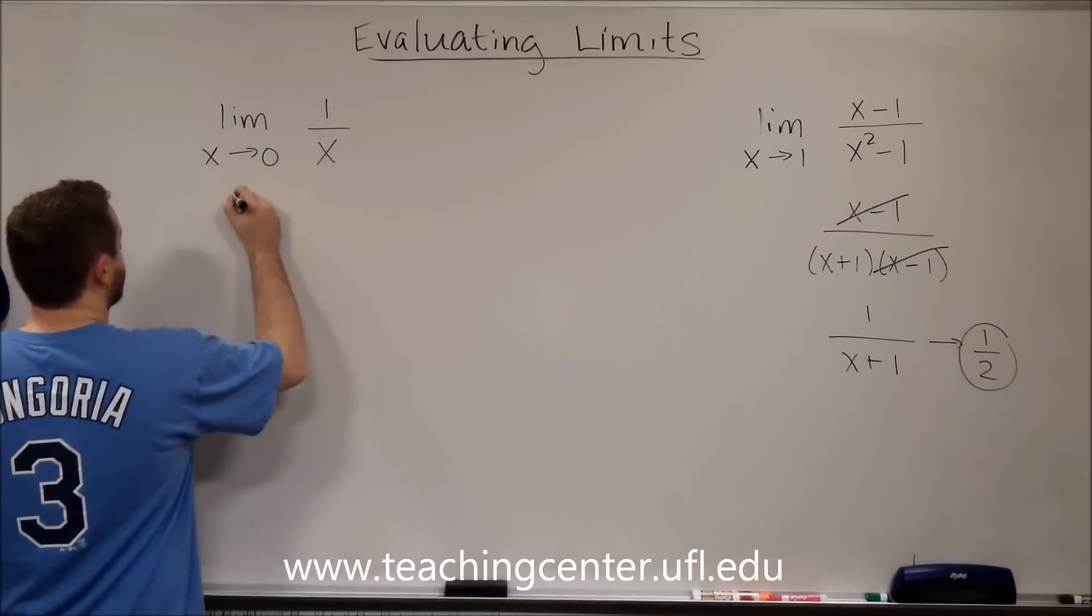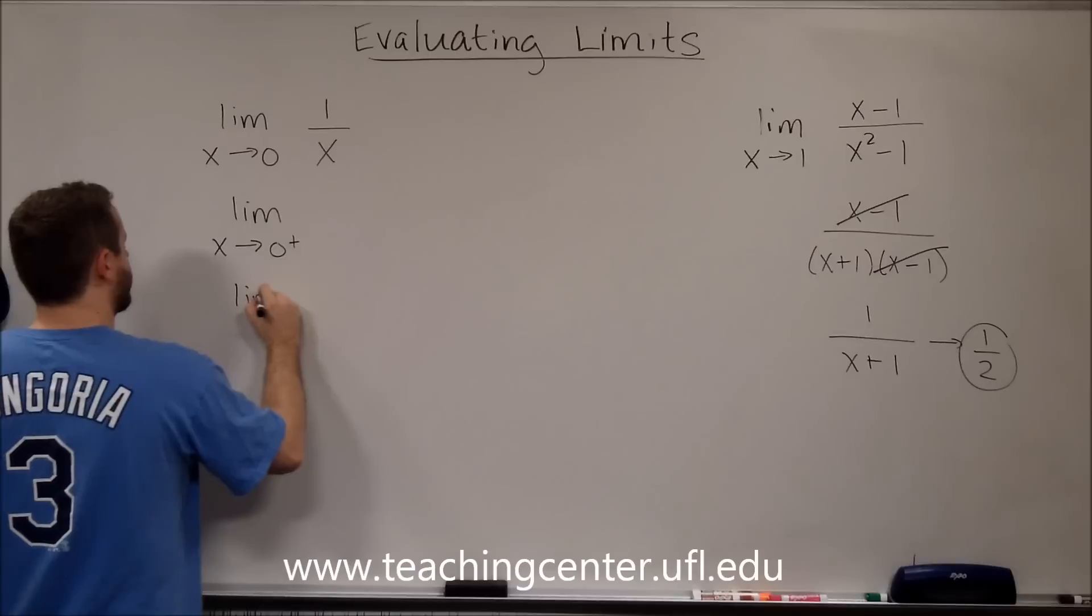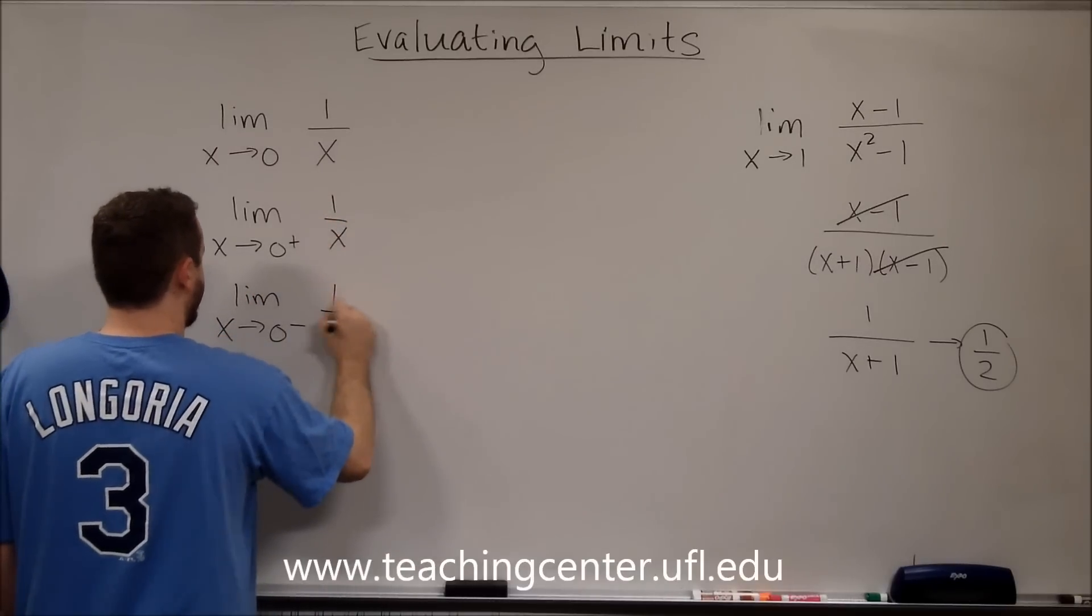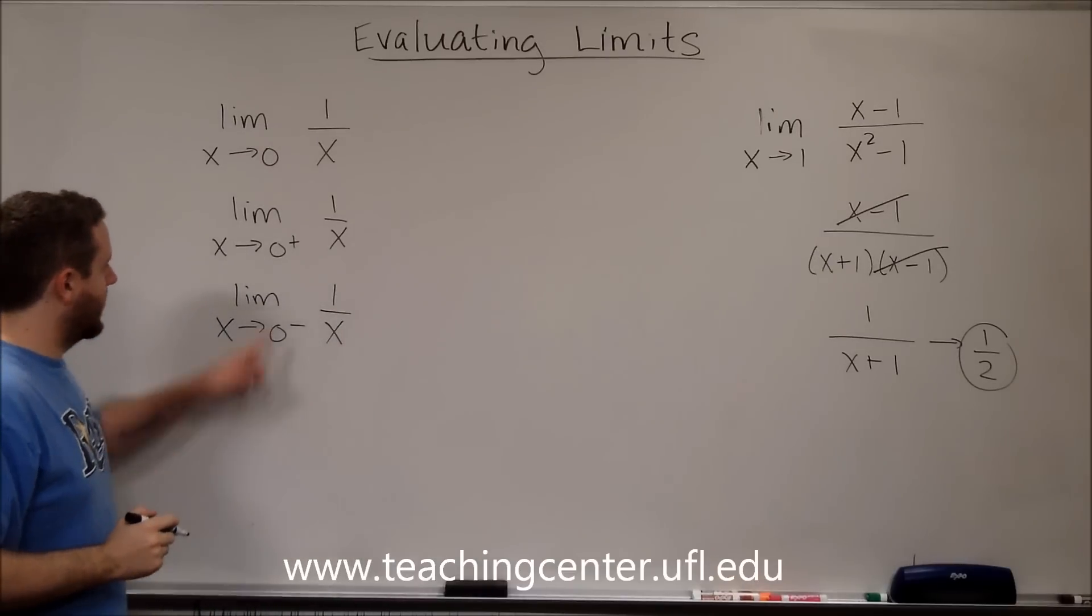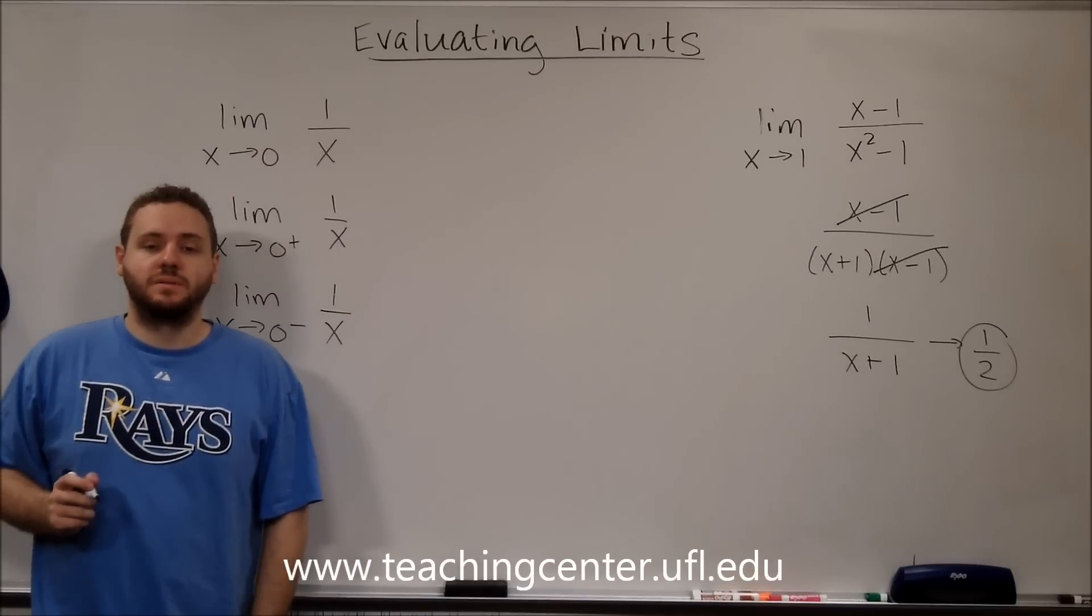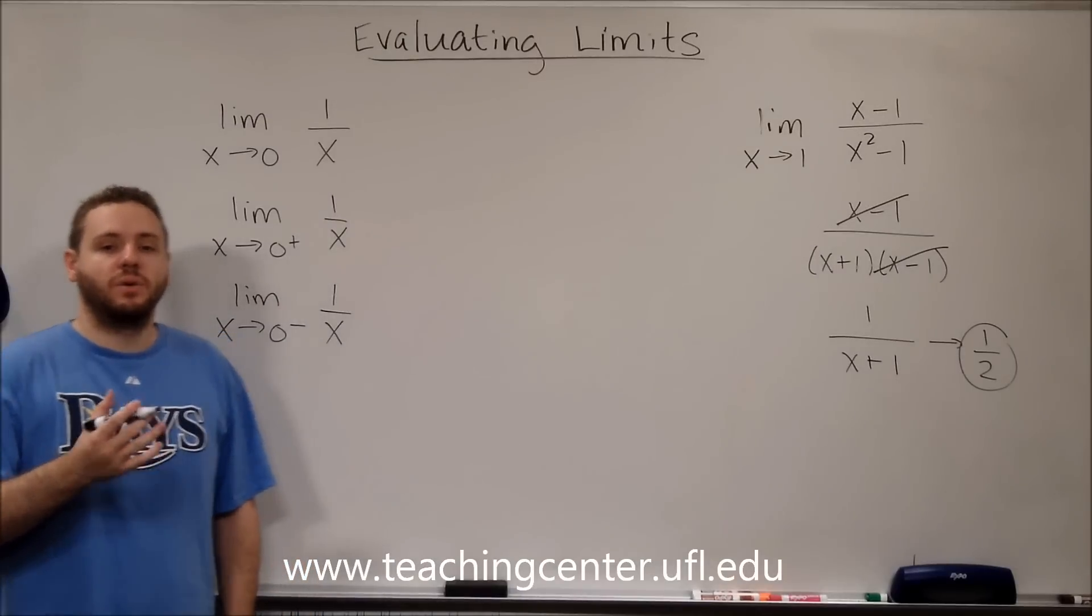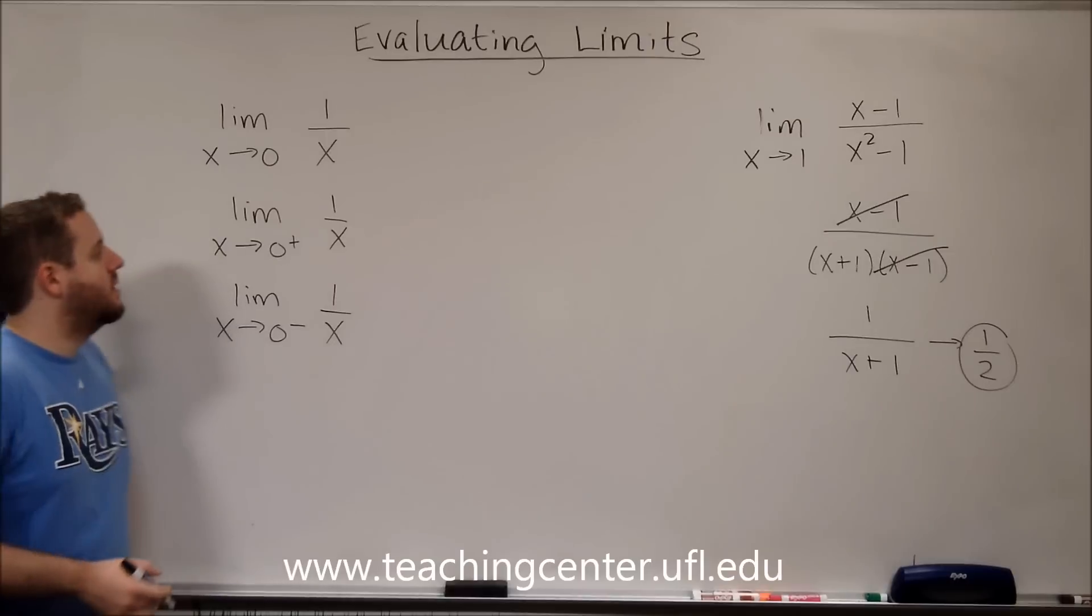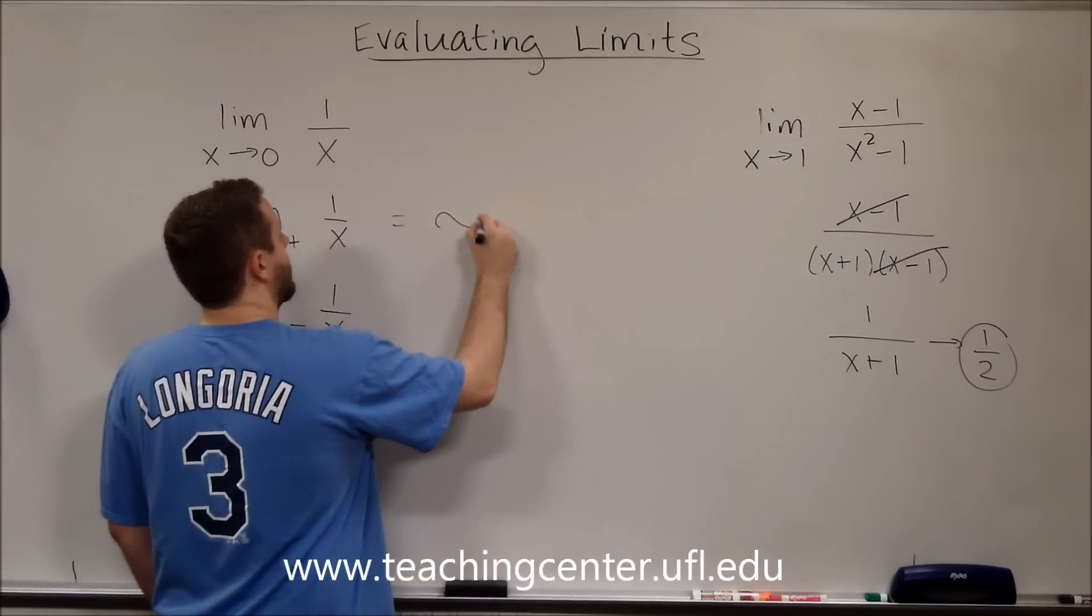So to figure this out, we need to do the limit as x approaches zero from the right and the limit as x approaches zero from the left. So conceptually you can think of this as 1 divided by very, very, very small positive numbers. As that number gets smaller and smaller and smaller, if you're doing 1 divided by a really small number, your number is just getting larger and larger and larger. So as you go to zero, that number is approaching infinity.